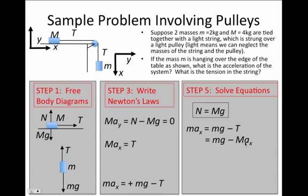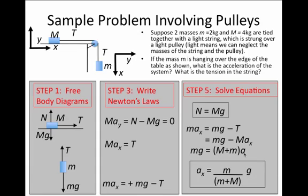I can move ax over to the other side, and I have mg is equal to the sum capital M plus little m times a, or the acceleration in the x direction is equal to the ratio of little m over the sum of M plus m times g.